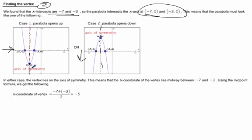So, to find the x-coordinate of this vertex, we can use the midpoint. And, of course, we know that the midpoint is going to be adding the two x-values together and dividing by 2. So, if we add negative 7 and negative 3, we get negative 10 divided by 2, and our x-coordinate of this vertex is negative 5.